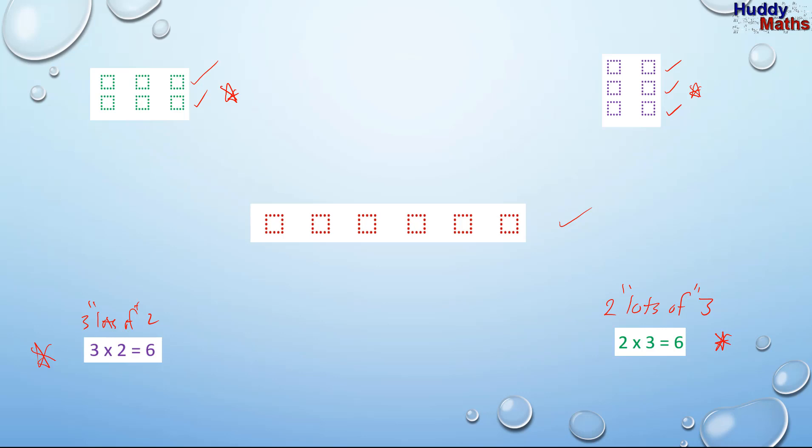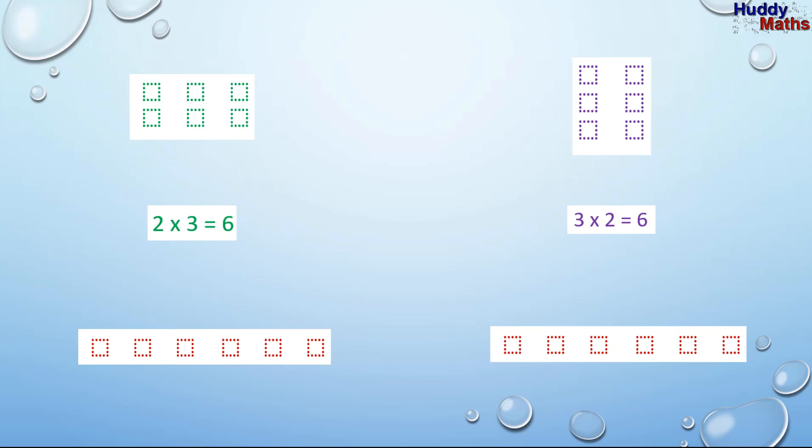Can we look at that in a bit more detail? Let's have a look now. I've lined everything up. So here we have two rows of three, two lots of three is six. And our way of thinking is that that's two, there's one lot of three, and there's another lot of three. You can partition six into two threes if you like.